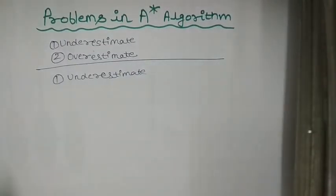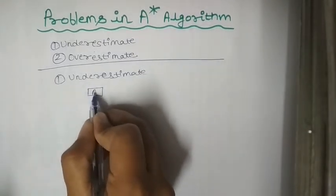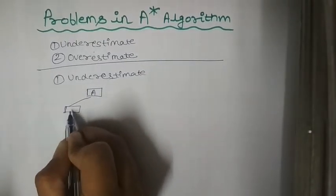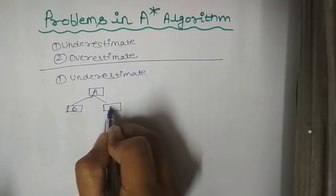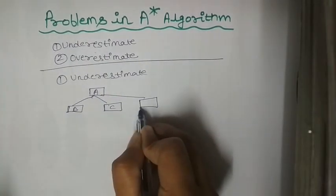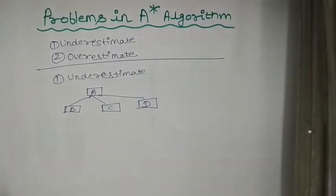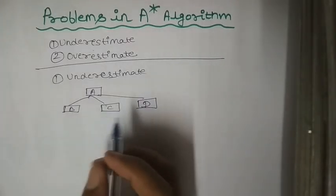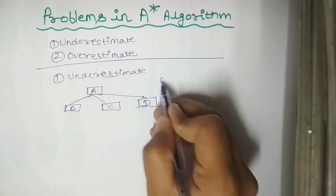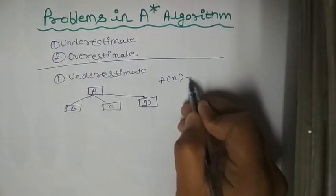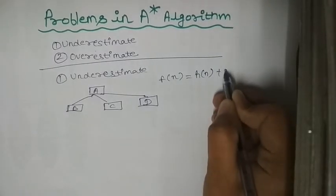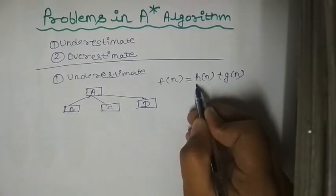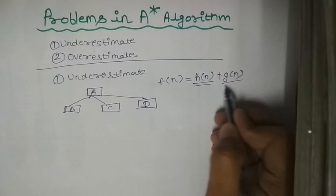Okay, see this. Suppose you have nodes like this: A, B, C, D, and you have calculated the heuristic values as well as the cost or edge value. You have to find the F(n) value. As you know, F(n) is equal to H(n) plus G(n). This is the heuristic function value and this is the cost or edge value.